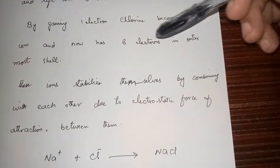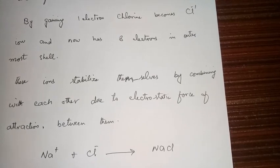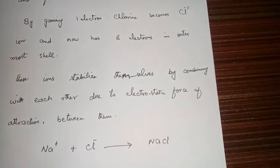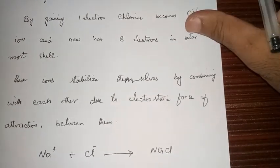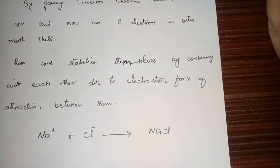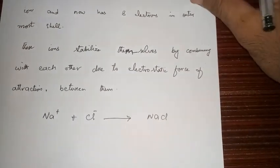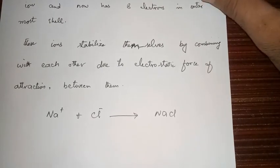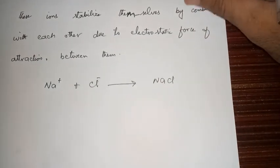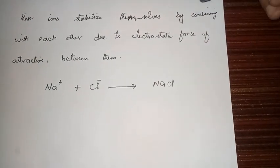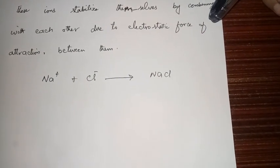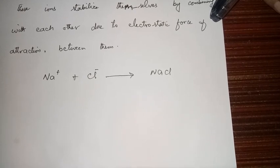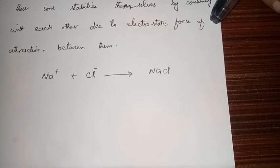By gaining one electron, chlorine becomes a chloride ion, which is negatively charged, and now also has eight electrons in its outer shell — its octet is complete. These ions then stabilize themselves by combining with each other due to the electrostatic force of attraction between them.